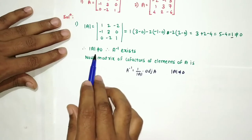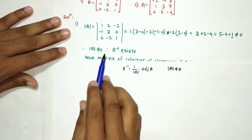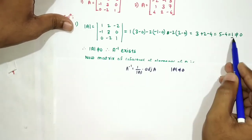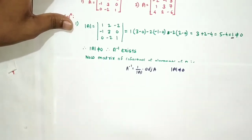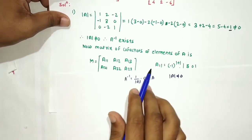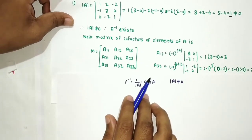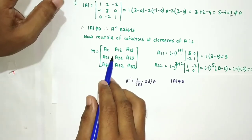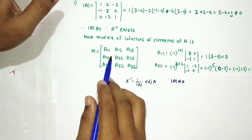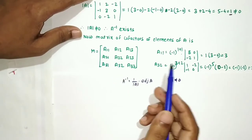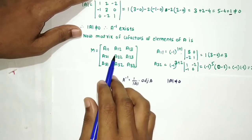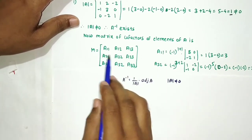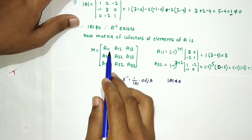Since determinant of A is non-zero, A inverse exists. The determinant of A equals 1. Now we find the matrix of cofactors of the elements of A. We denote the matrix of cofactors, and then take its transpose to obtain the adjoint.